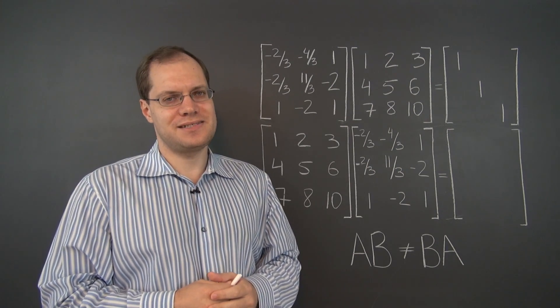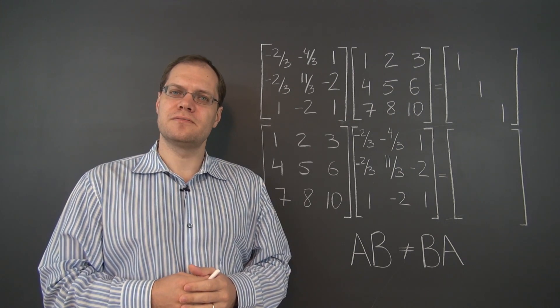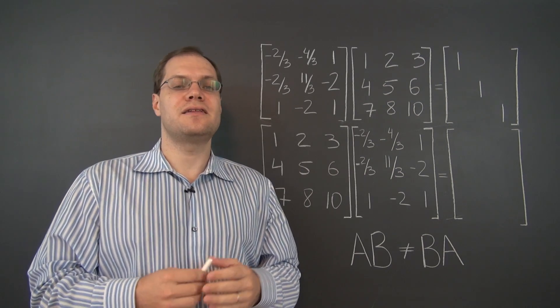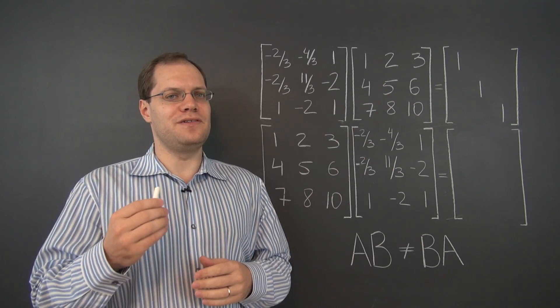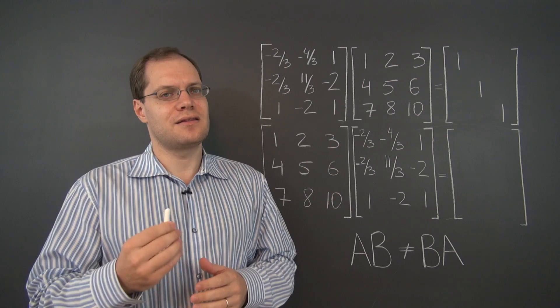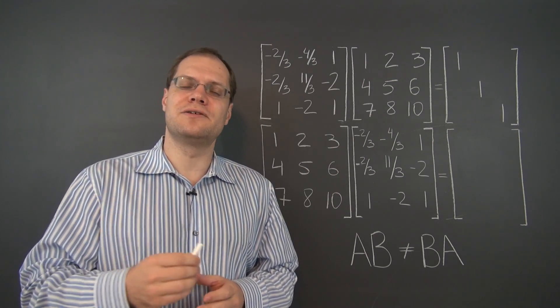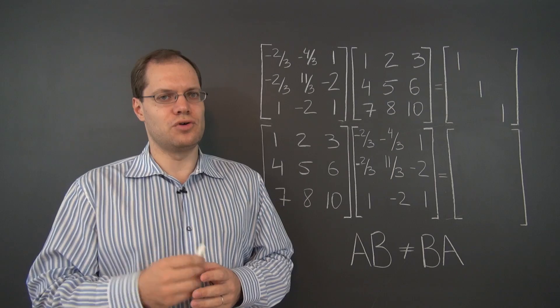This video is about the second little miracle of linear algebra. The first one being the fact that for any matrix, the number of linearly independent columns, the column rank, always equals the number of linearly independent rows, the row rank.